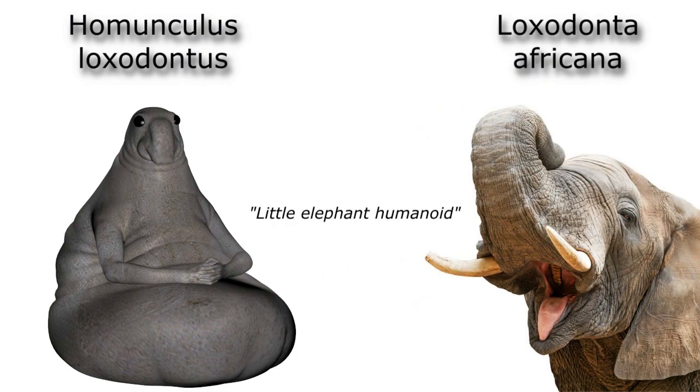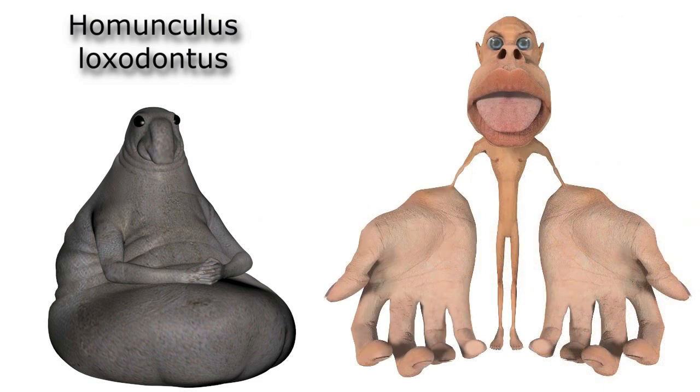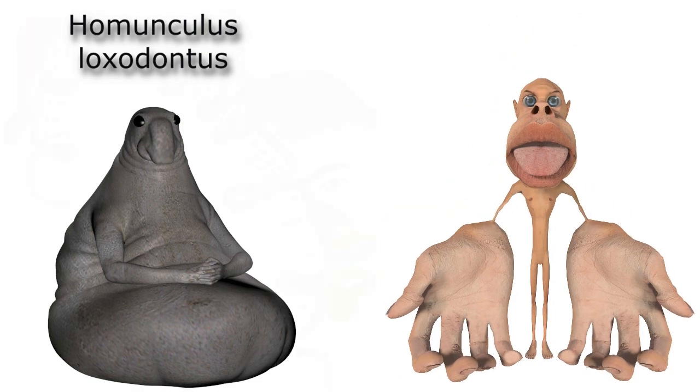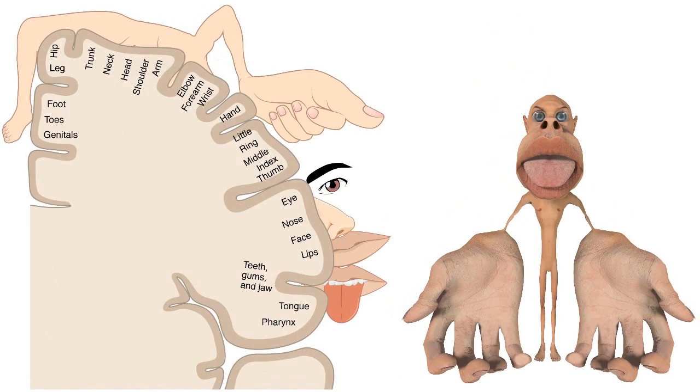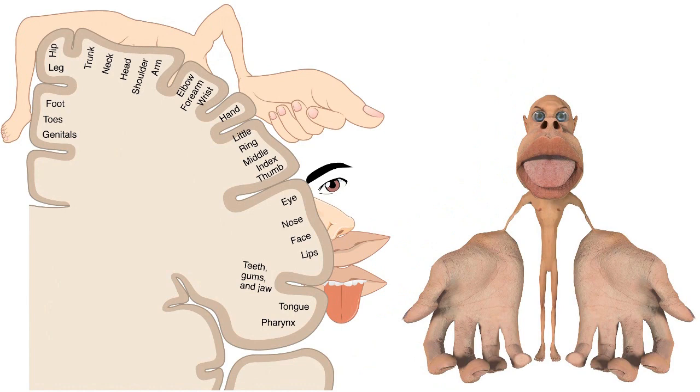When talking about the neurosciences, our homunculus is a dysmorphic little man whose grotesquely overdeveloped body parts of the hands, lips, and tongue depict the relative volume of cortical brain dedicated to the regional anatomy and therefore is called a cortical homunculus.